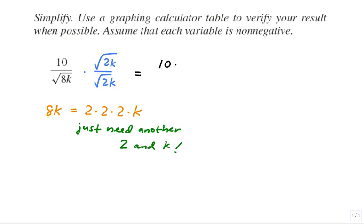Multiplying the numerator straight across, you get 10 radical 2k over the square root of 16k squared, which is a perfect square, and that's what we wanted. The square root of 16k squared is 4k.